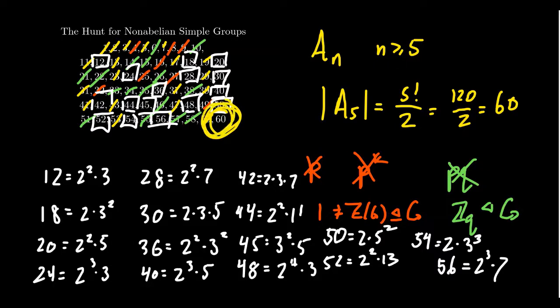So what we're going to do in our next lecture, finishing up this discussion, this hunt for Red October here, is we're going to consider these other numbers 12 through 56 and explain why there cannot be a non-abelian simple group of those orders.